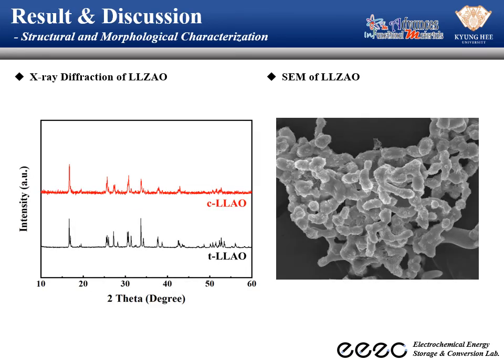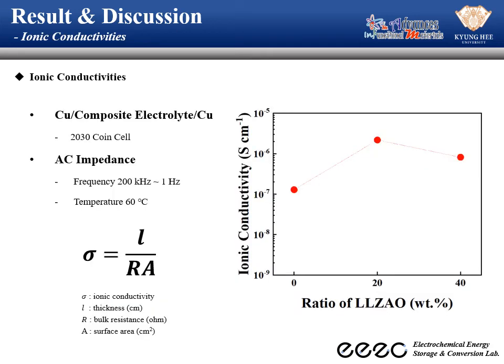First, it was confirmed through XRD whether LRGO was well synthesized in cubic form. It had a tetragonal structure before ball milling, shown as the black line. It was confirmed that a cubic structure was formed after ball milling, shown as the red line. In addition, the SEM image shows the LRGO structure image.